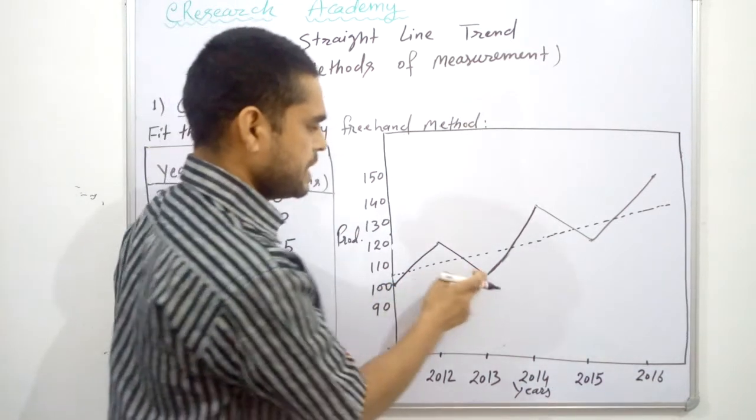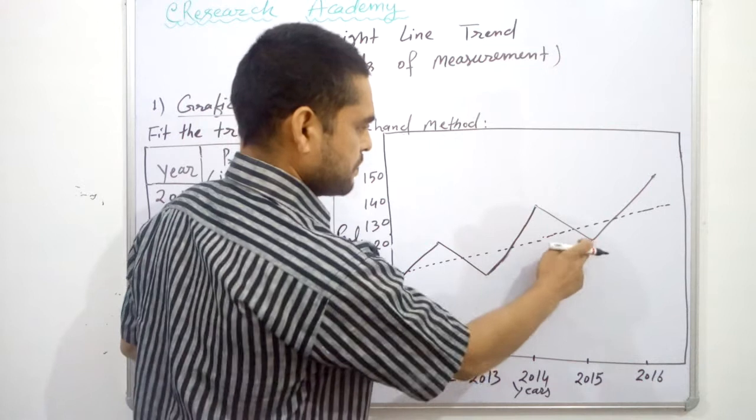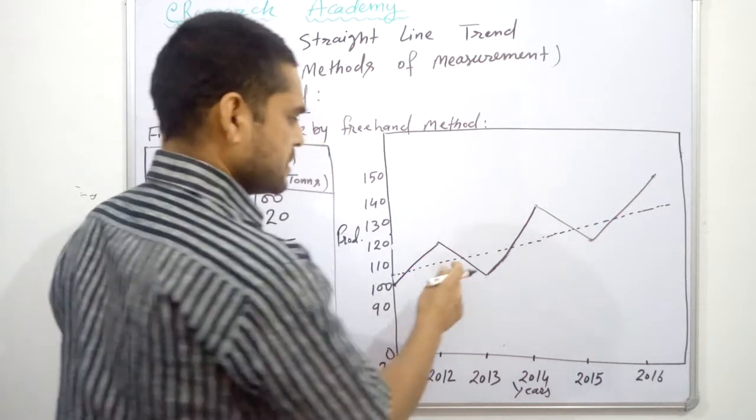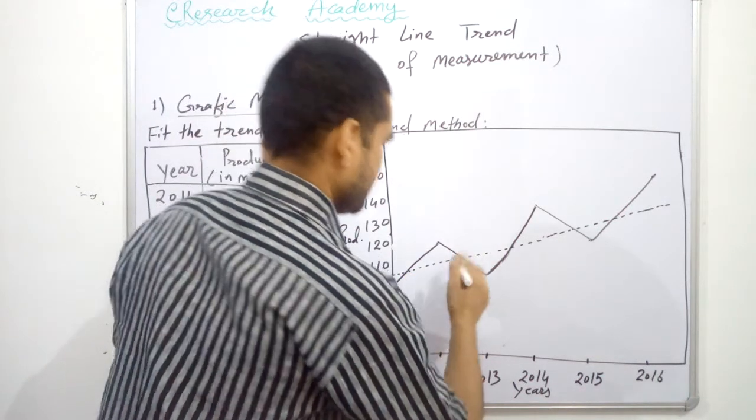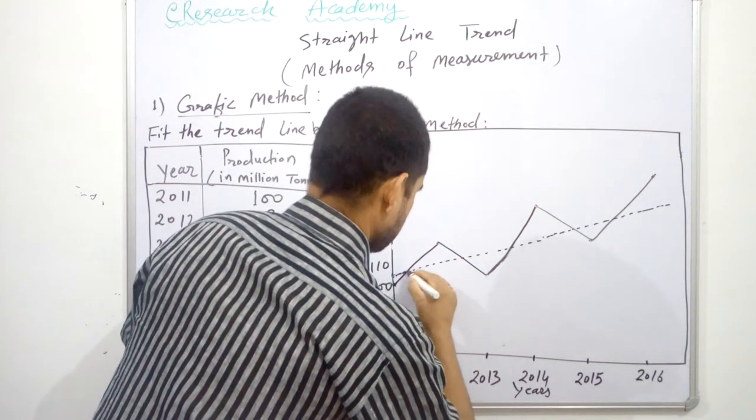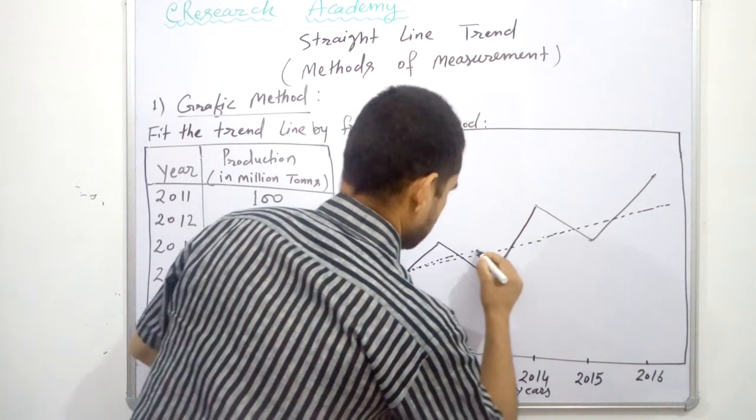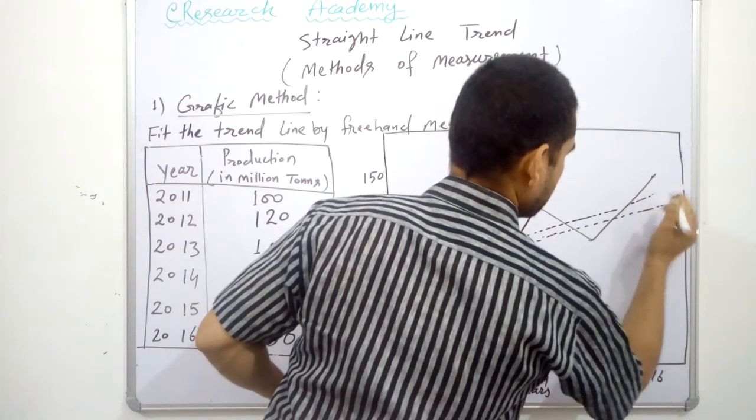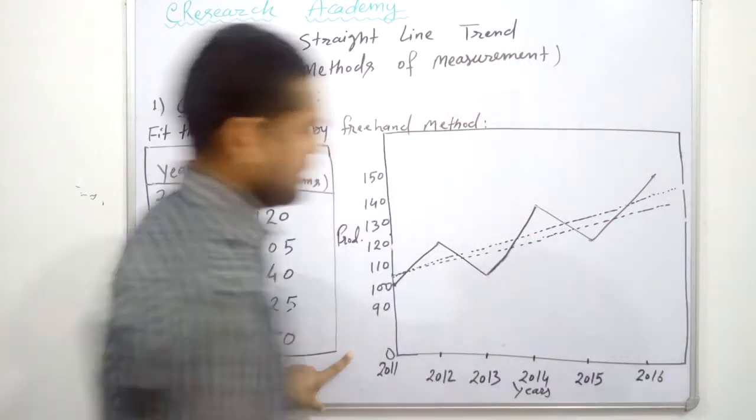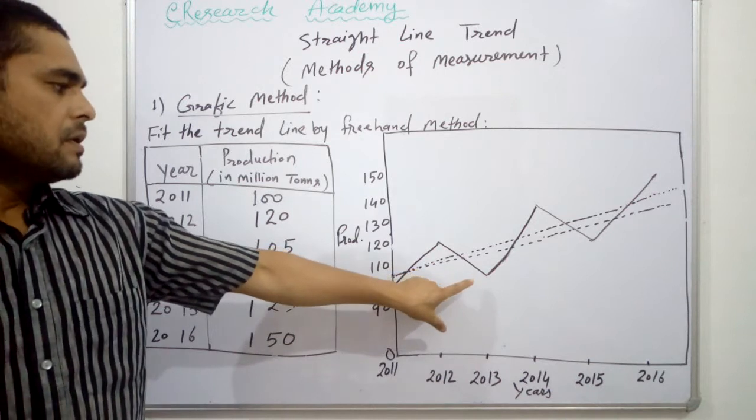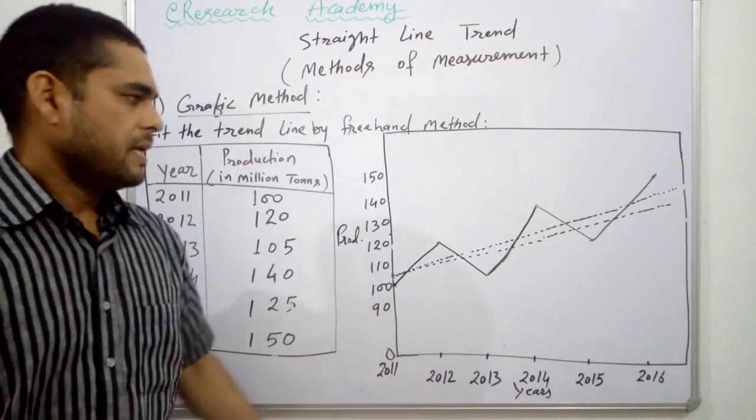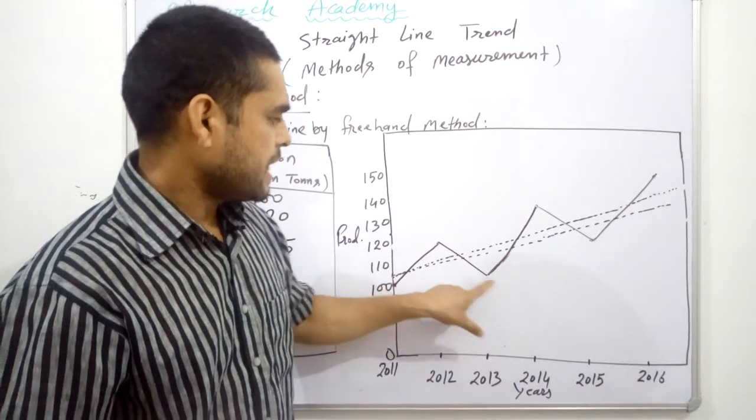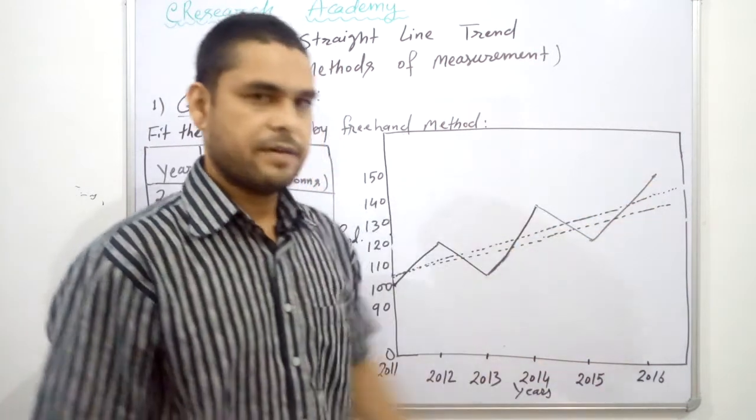And we can also draw it somewhere above to this one like this. As I was just mentioning, this is totally on the basis of the personal judgments of the statistician. But whatever the line you draw, it must be represented to the upper as well as lower points of this actual data.